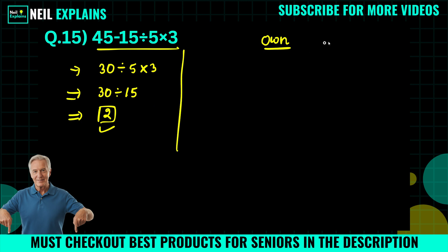I'm gonna solve this with the help of PEMDAS and by using a stepwise method with simple mathematics. So here we will rewrite our question again: 45 minus 15 divided by 5 times 3.